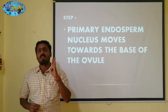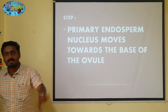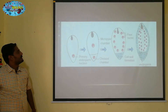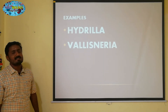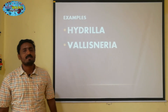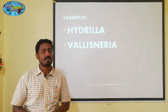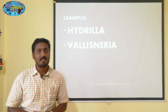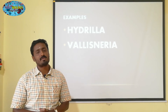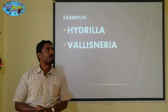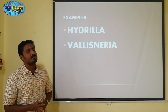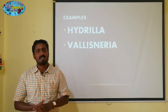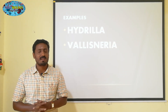The two examples are Hydrilla and Vallisneria. These are hydrophytic plants and they are the best examples for Helopil endosperm.